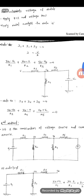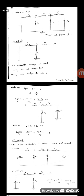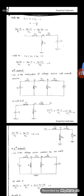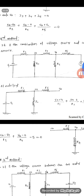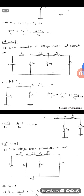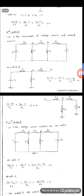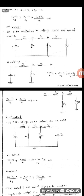In the second method, the circuit consists of one voltage source and one current source. When it consists of a current source, the problem becomes very simple compared to two voltage sources.